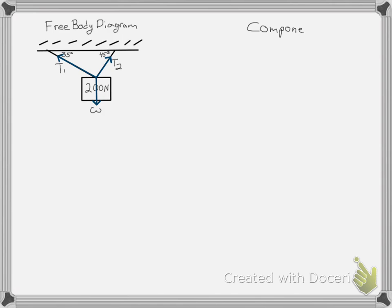The next step will be to draw the component diagram showing only the components of the vectors. The weight is already on the vertical axis, so I don't have to do anything with that.